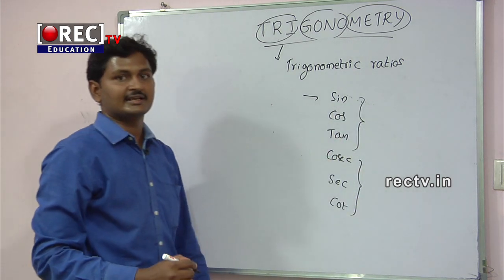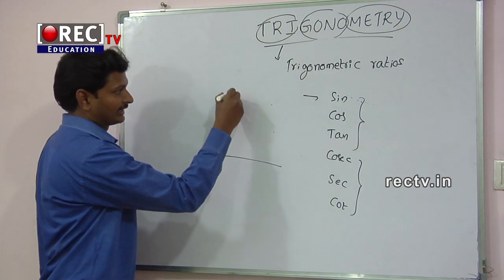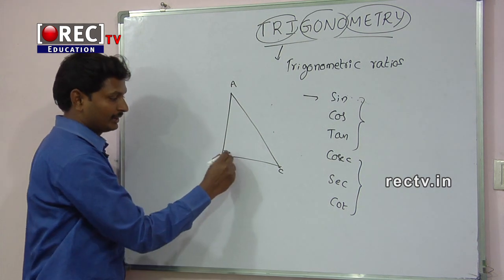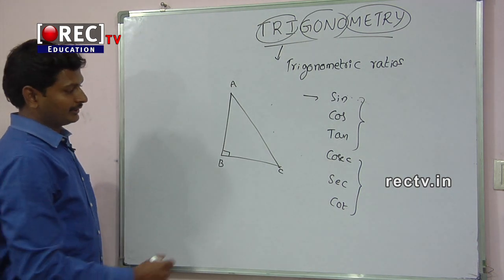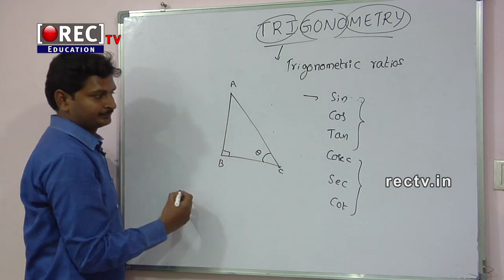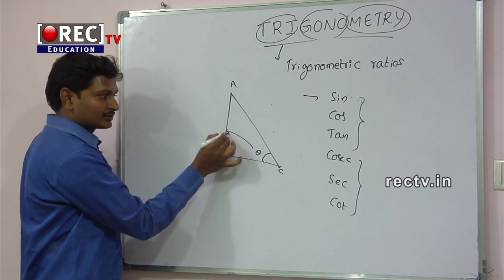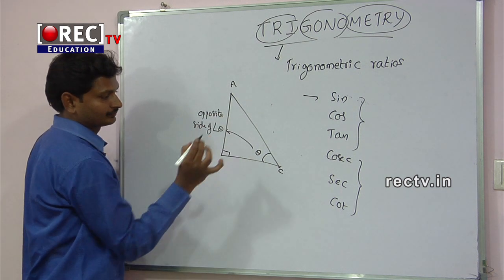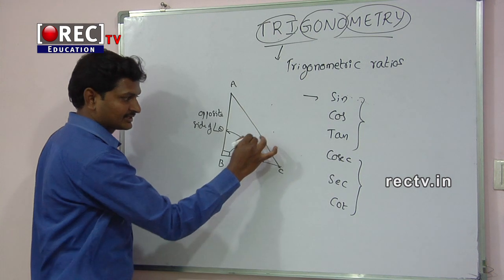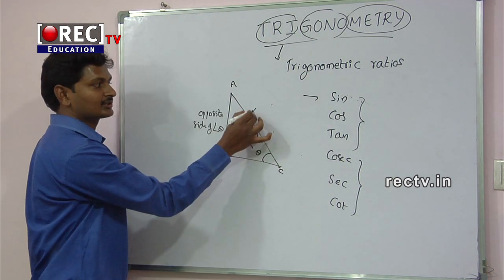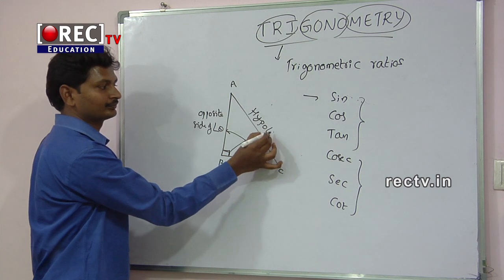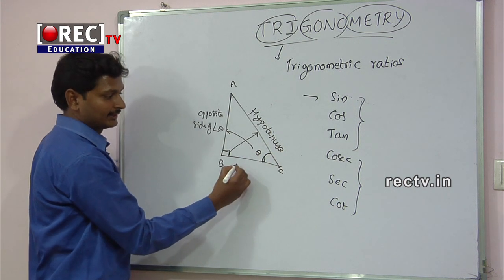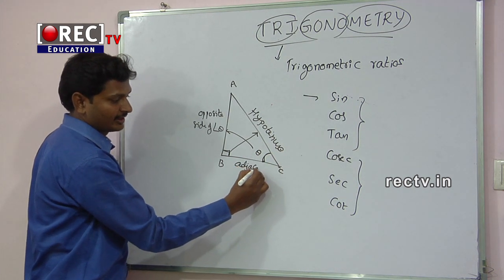These are the ratios of the sides of triangles. First, you have to consider any right-angled triangle ABC. Angle B is equal to 90 degrees. In this triangle, if this angle is equal to theta, this side becomes the opposite side of angle theta. The side exactly opposite to 90 degrees is called the hypotenuse. The remaining side, adjacent to angle theta, is called the adjacent side.